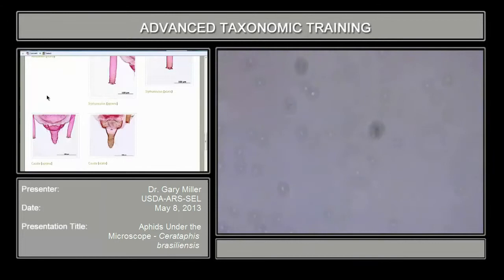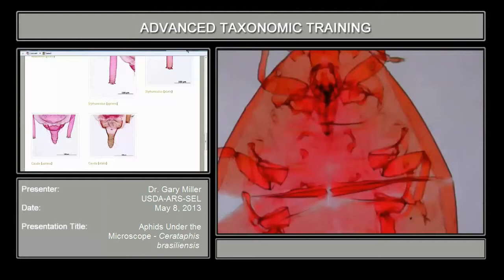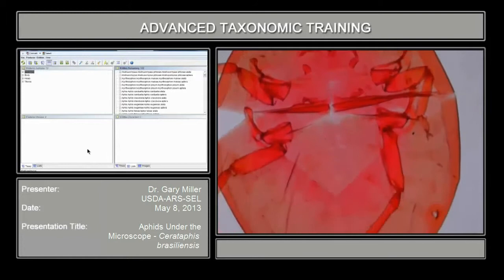If you have your specimen of Cerataphis, we're going to take one without wings — an aptera. So we have our specimen in the field right now. We're going to try the Lucid key again.